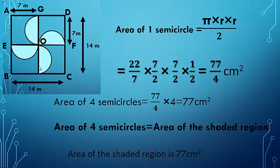The area of four semicircles is 77 centimeter square. The area of four semicircles is the same as the area of the shaded region. So the area of the shaded region is 77 centimeter square.